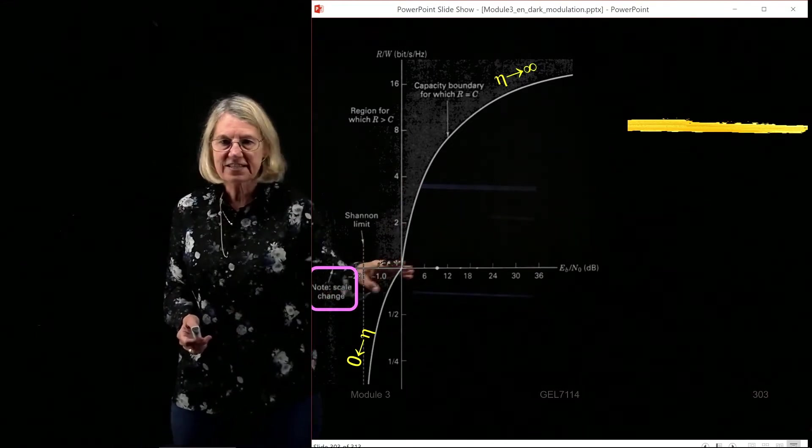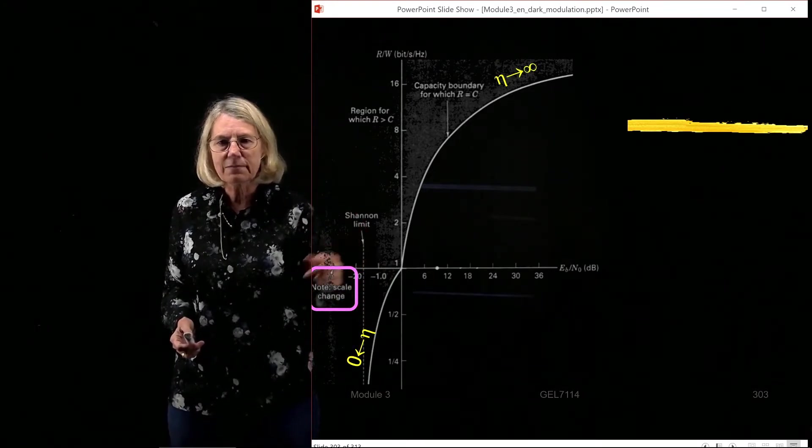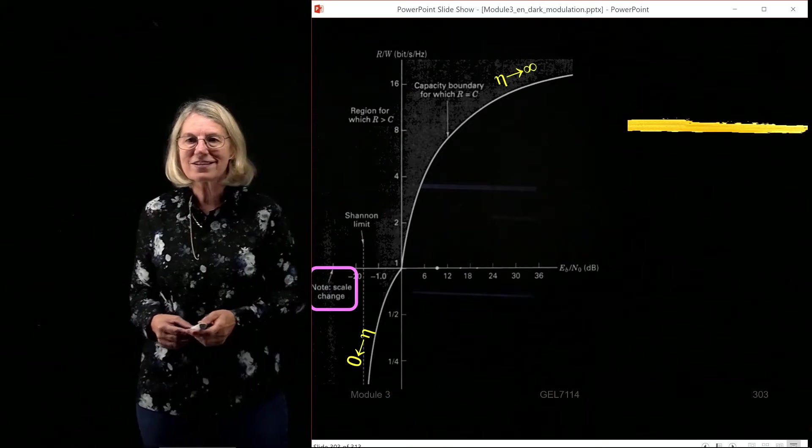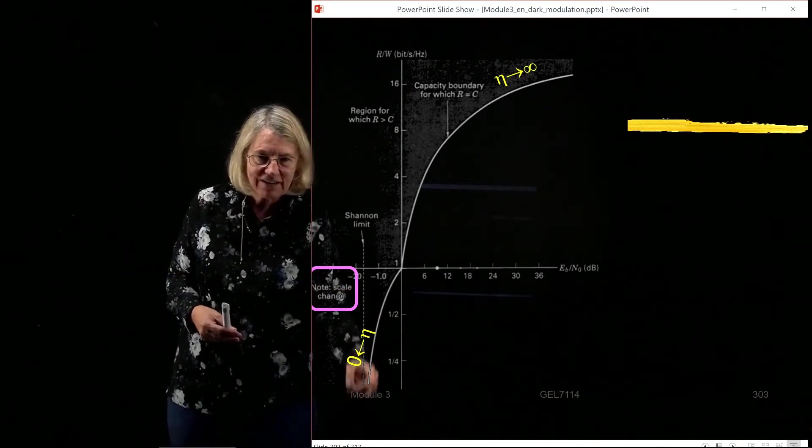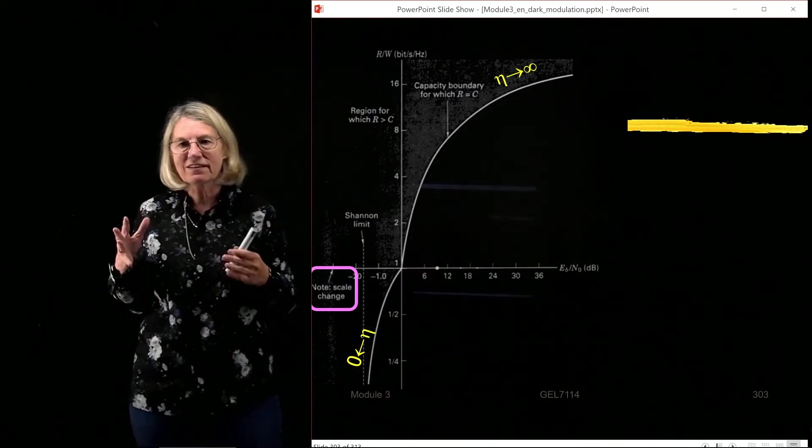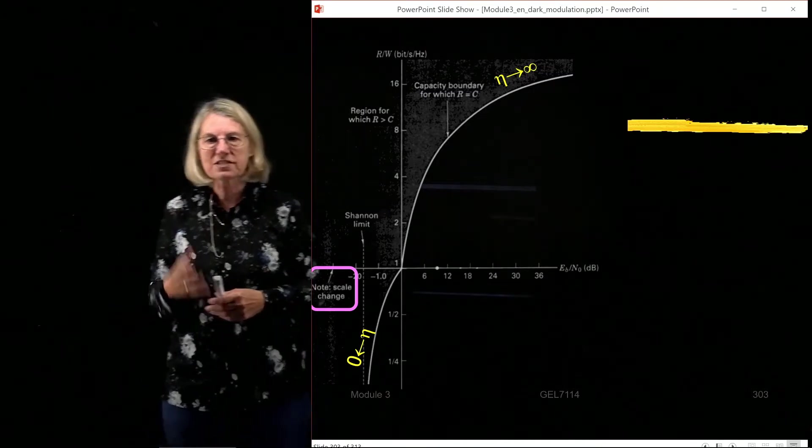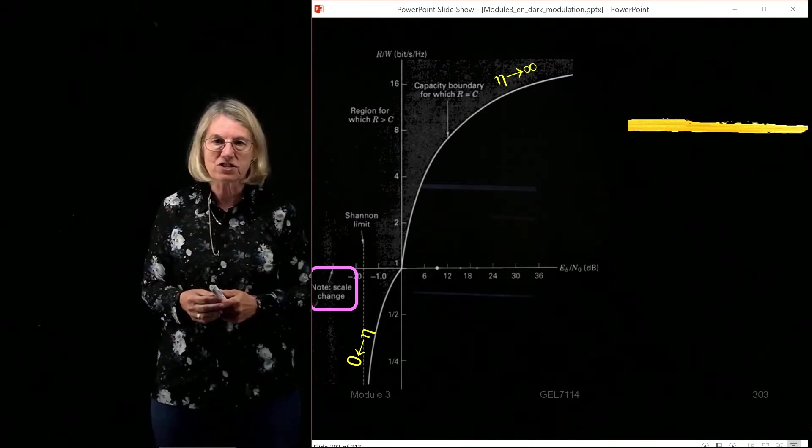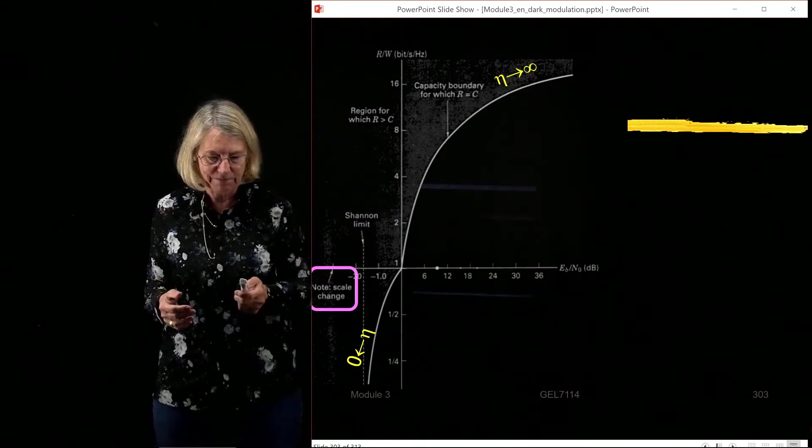We change the scale here just so that we can highlight and easily view this limit of minus 1.6 dB as being the lowest, the asymptote here, that this Shannon capacity approaches as being the lowest Eb over N0 which will still permit reliable communications, albeit with a whole lot of bandwidth being used.